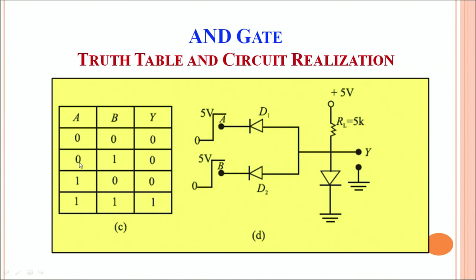When one input is zero and the other is one, either D1 or D2 remains in a short state and conducts, so current flows and the output at Y is still zero. Only in the fourth case, when both A and B are connected to high potential — input 1,1 — current is not allowed to flow through the diodes and the output across Y is measured as 1. This is how an AND gate is realized.